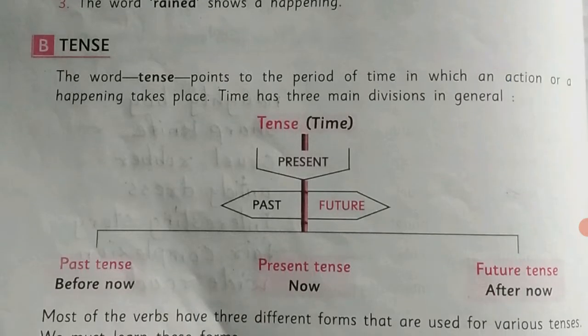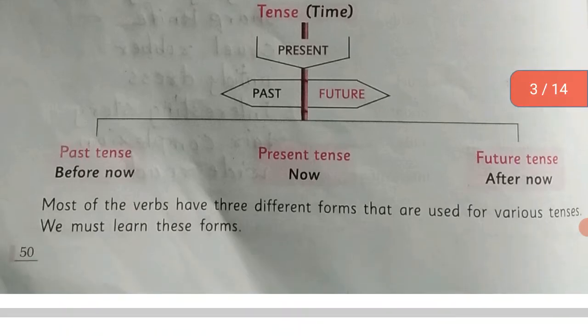The word tense points to the period of time in which an action or a happening takes place. Time has three main divisions in general. There are three main tenses: past, present, and future. Past tense means before now. Present tense means now. Future tense means after now.